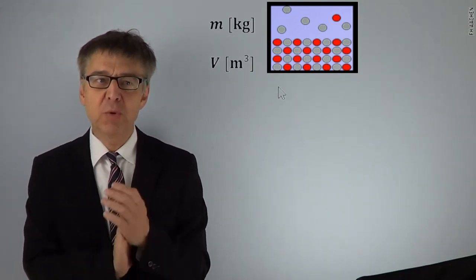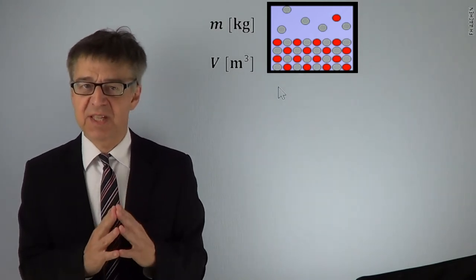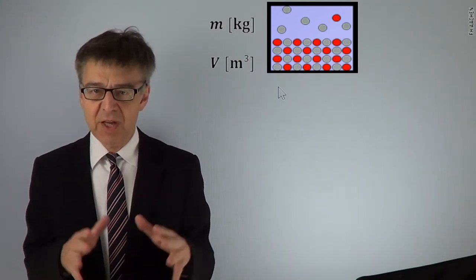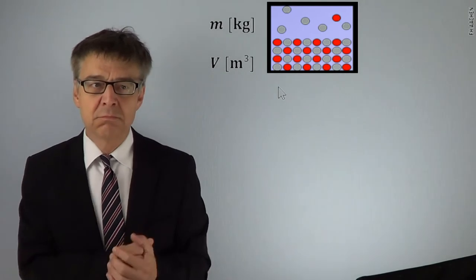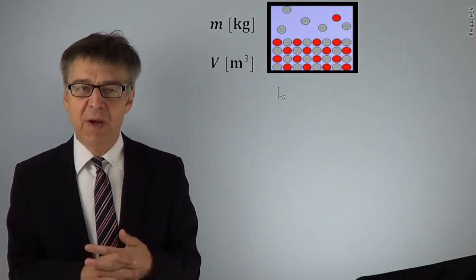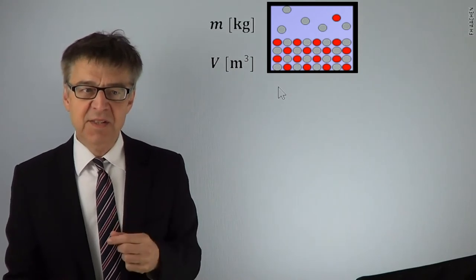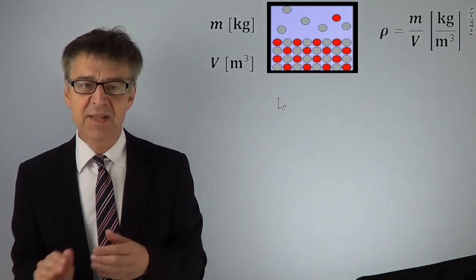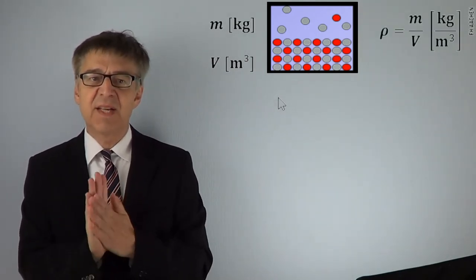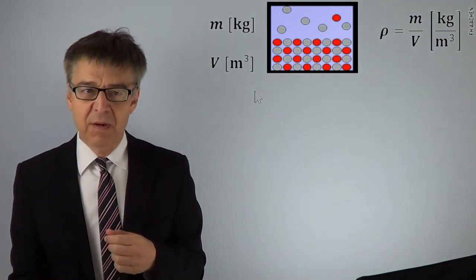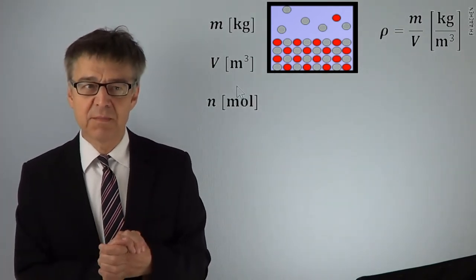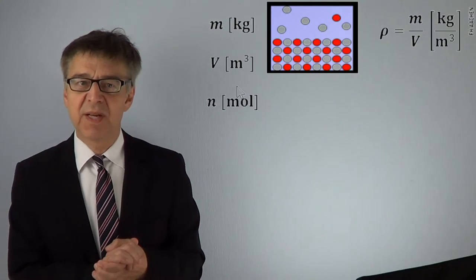Mass and volume are extensive state variables. A doubling of the system leads to a doubling of these variables. Density, on the other hand, is an intensive state variable. Doubling of a system, density remains unchanged.